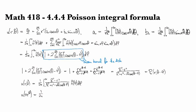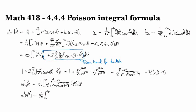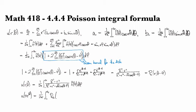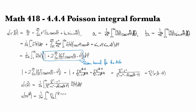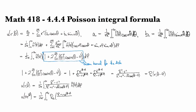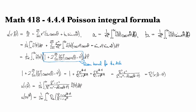So this is 1 over 2π, integral from 0 to 2π. And then what we've got here is actually the real part of (R + re^(i(θ-φ))) over (R - re^(i(θ-φ))).